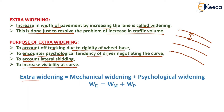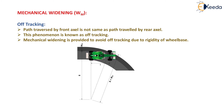Extra widening equals mechanical widening plus psychological widening, represented as WE = WM + WP. Now we will go for the derivation of mechanical widening.